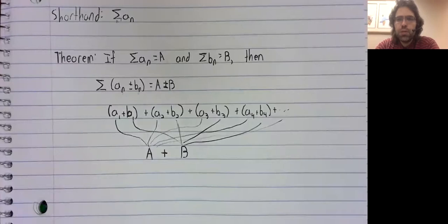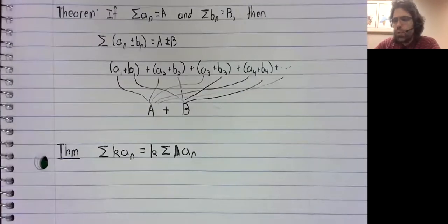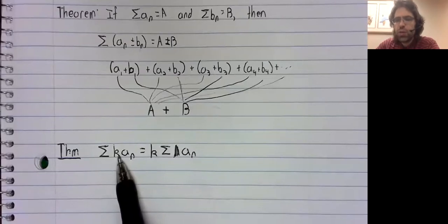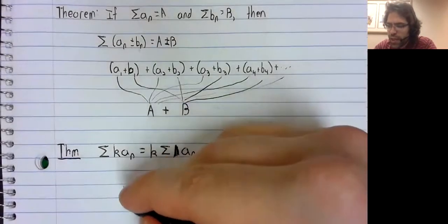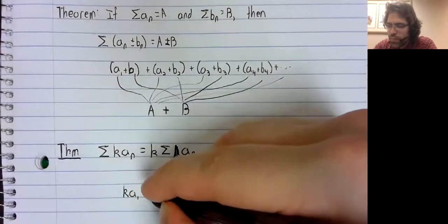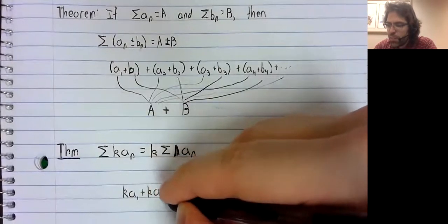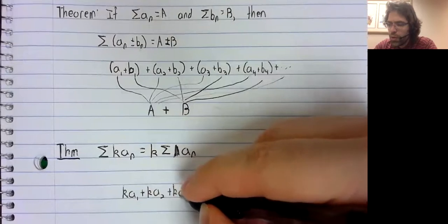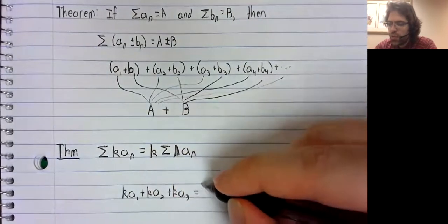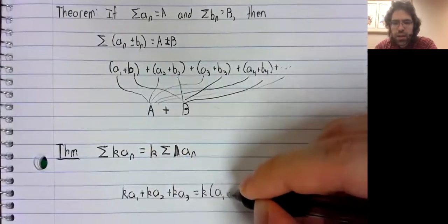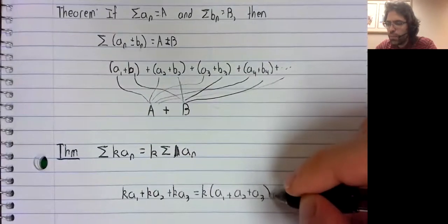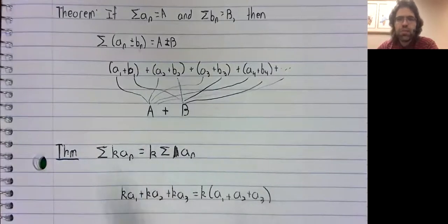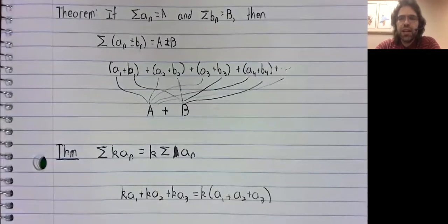We can pull constants out of finite sums. So if we had a finite number of A's, we could certainly pull K out of that finite sum. This theorem says we can pull constants out of infinite series as well.